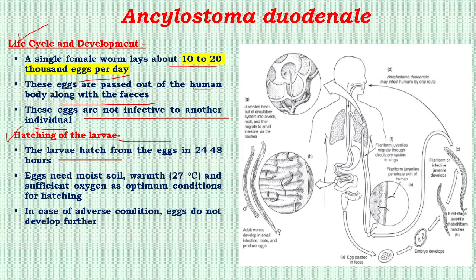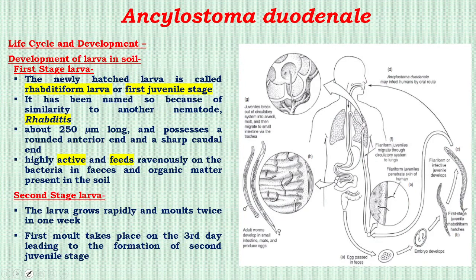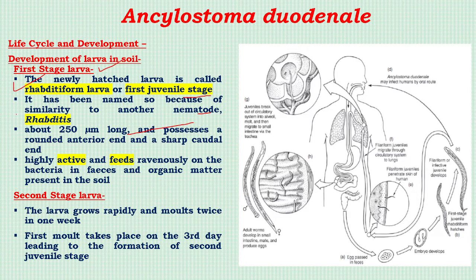Hatching of larvae from eggs occurs in 24 to 48 hours. Eggs need moist soil, warm temperature (27°C), and sufficient oxygen for hatching. The first-stage larva, the newly hatched larva, is known as the rhabditiform larva (first juvenile stage), named due to its resemblance to the nematode Rhabditis. It is about 250 micrometers long, with a rounded anterior end, a sharp caudal end, and is highly active.